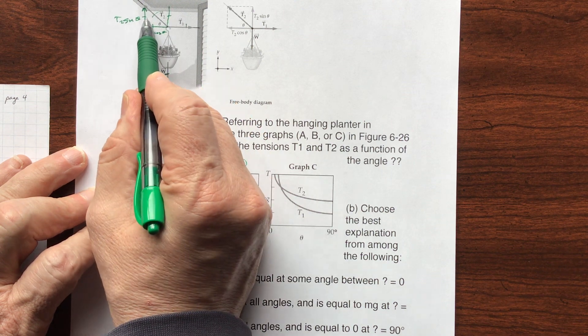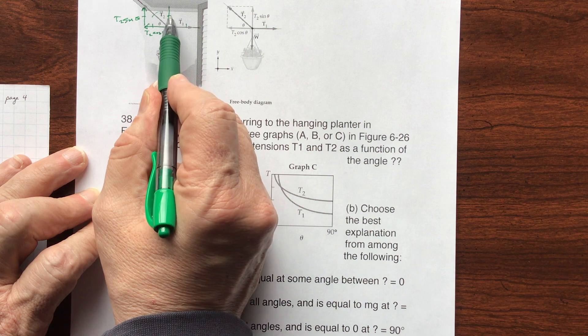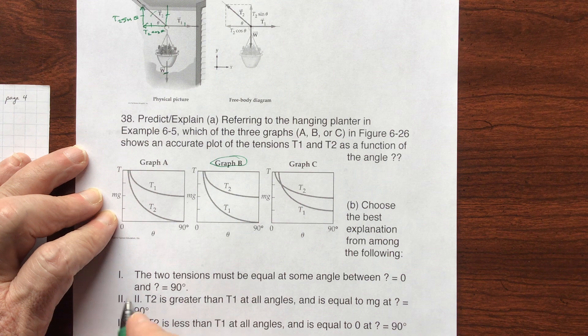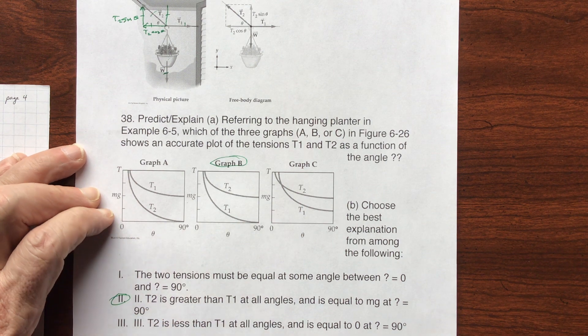This vertical is when the theta is at 90, and this will equal that. So I would say that it's 2.